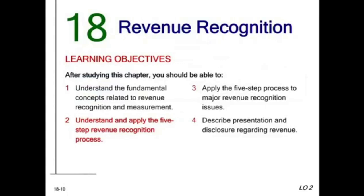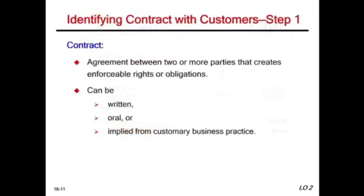Now let's look at step one in depth: what is a contract? A contract is an agreement between two or more parties that creates enforceable rights or obligations. The contract doesn't have to be written — it can be written, oral, or implied from customary business practice. For example, if you go into a supermarket, pick up an item, walk to the self-checkout, pay, and leave — that is an implied contract from customary business practice. You did not sign a paper or talk to anyone, but that is a contract.